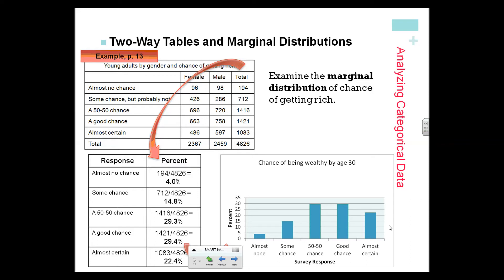That doesn't make sense for categorical data. It doesn't make sense to say this one's skewed towards almost none. We would describe which one's more, which one's less, and so forth.